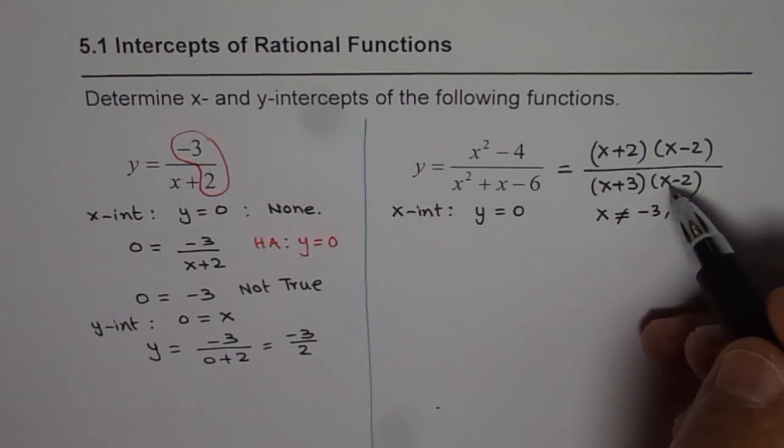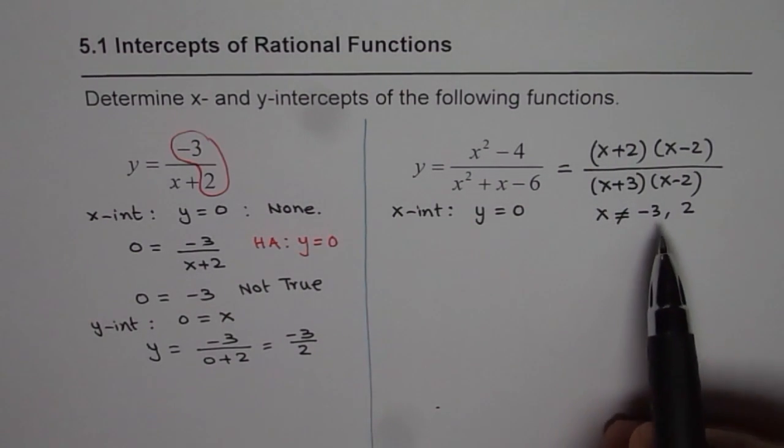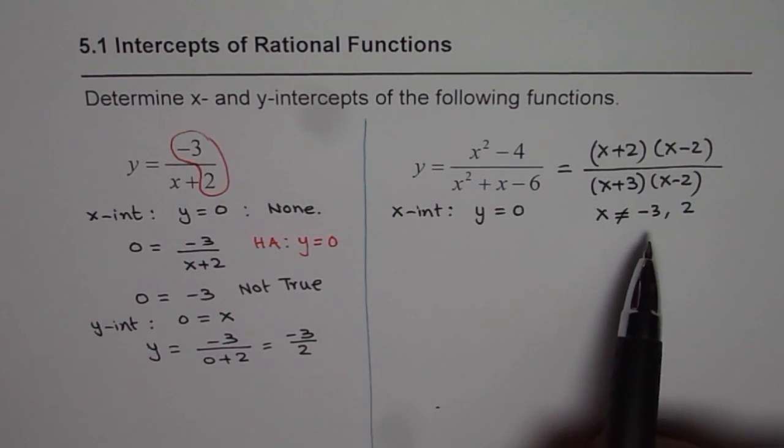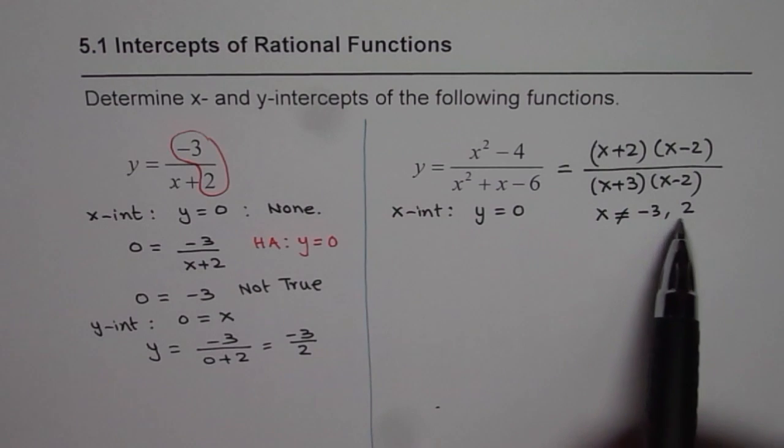However, x minus 2 do cancel out, so we have a hole at this point. But anyway, to begin with, let us be clear that the function is not defined at x equals minus 3 and 2.